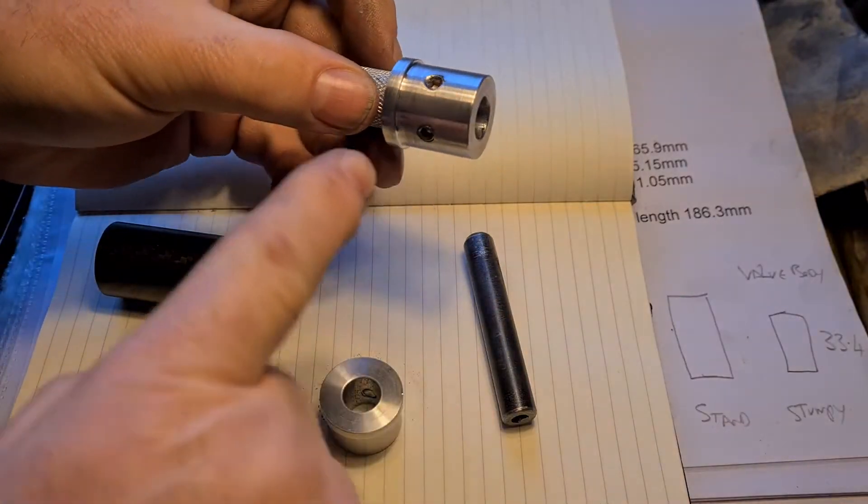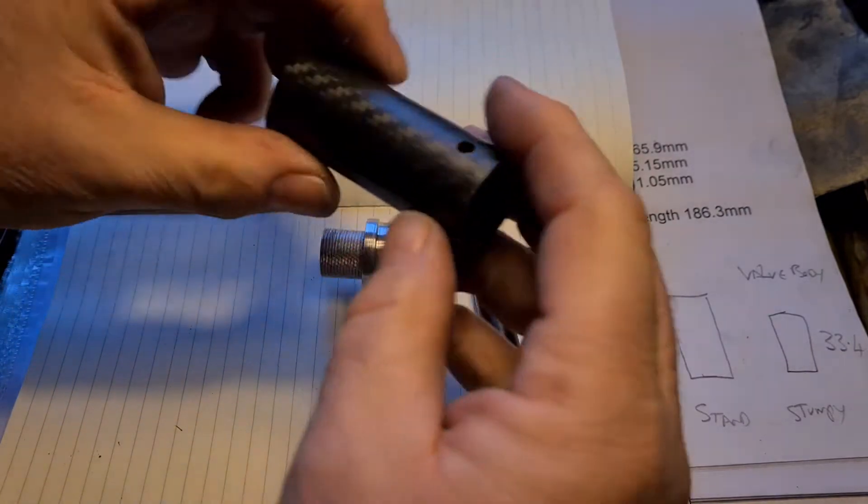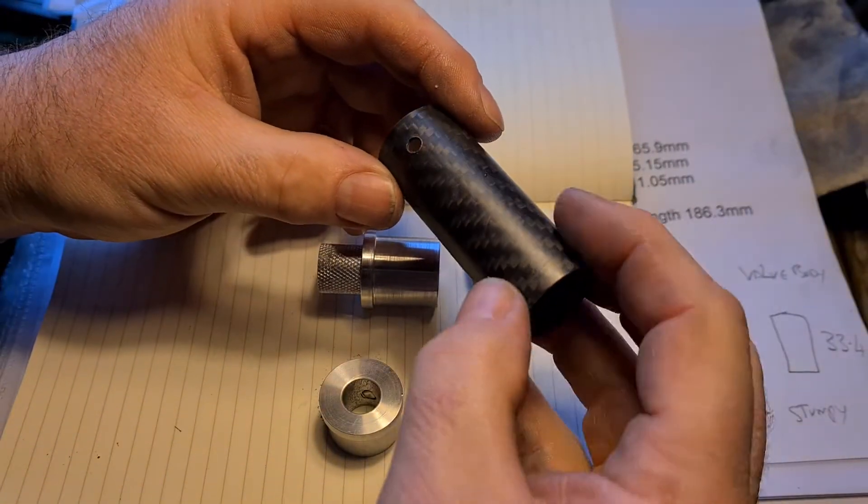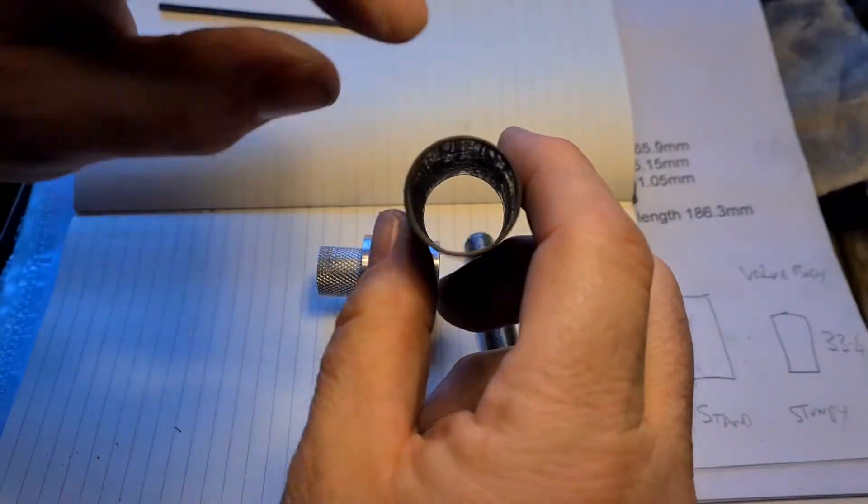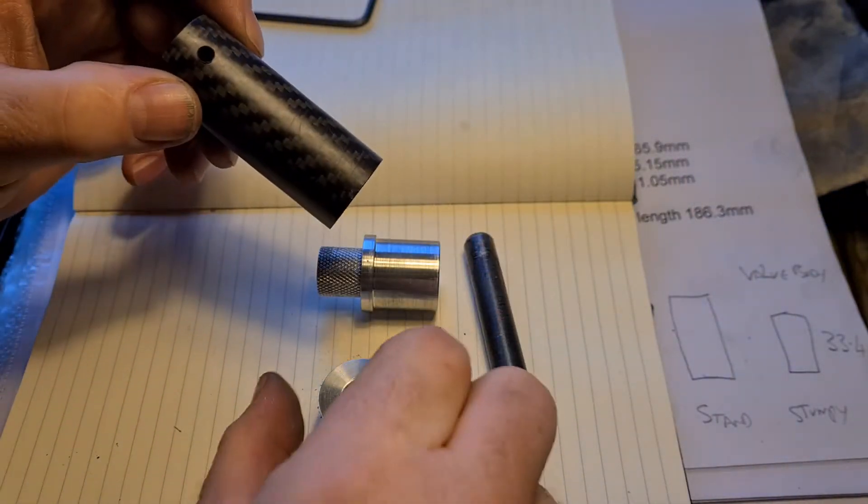It has two M6 stainless grub screws. Now he's told me he's using carbon fiber tube, 25mm outside diameter, 23mm inside diameter, with a 1mm wall thickness. So providing he uses that tube, these should fit.